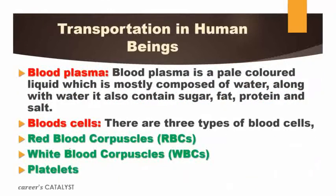Now, what is blood plasma? Blood plasma is a pale colored liquid — it is not red in color. Our blood is red in color because of red blood cells. Blood plasma is mostly composed of water, and along with water it contains sugar, fat, protein, and salt.